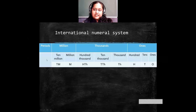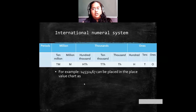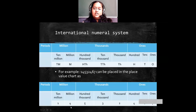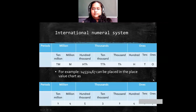After 1 million we have 10 millions, then 100 millions. So 10 millions equals 1 crore and 100 millions equals 10 crores. Here an example number reads as 14 millions, 532,467. So this is the international numeral system. We will see some problems on both Indian and international numeral systems for large numbers.